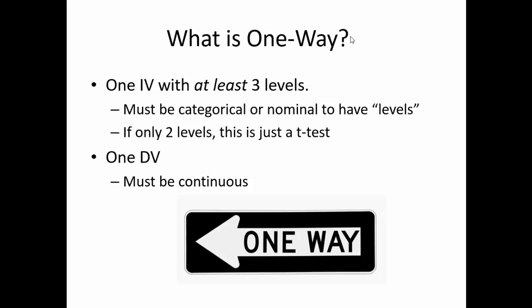ANOVA itself is an extension of a t-test, but is a special kind of t-test that is able to test multiple mean differences, which of course requires at least three means. If the independent variable only has two levels, it would just be a t-test.